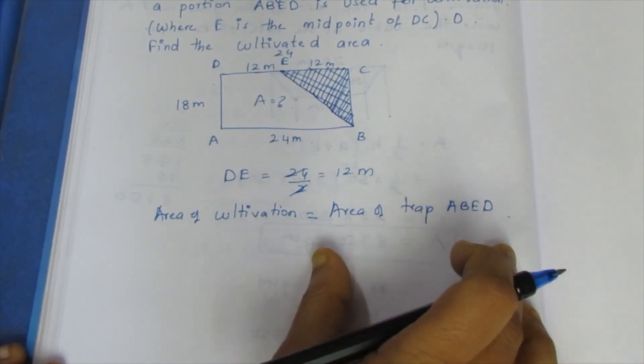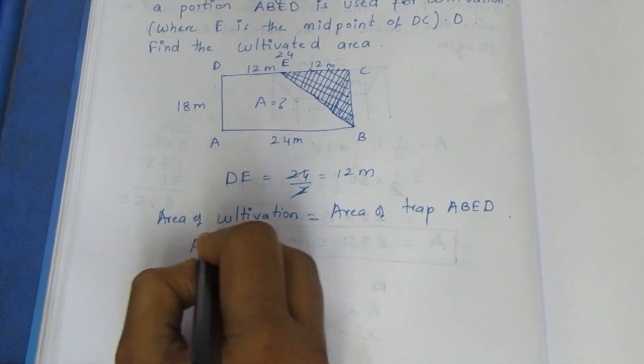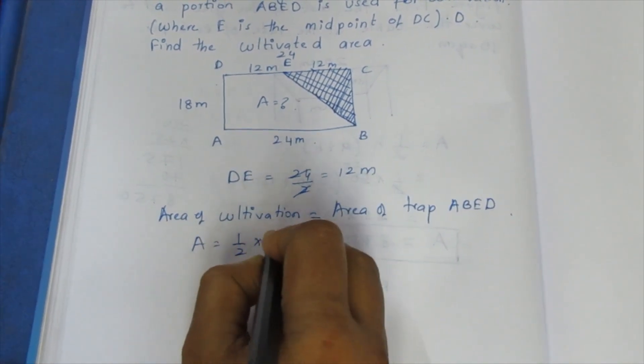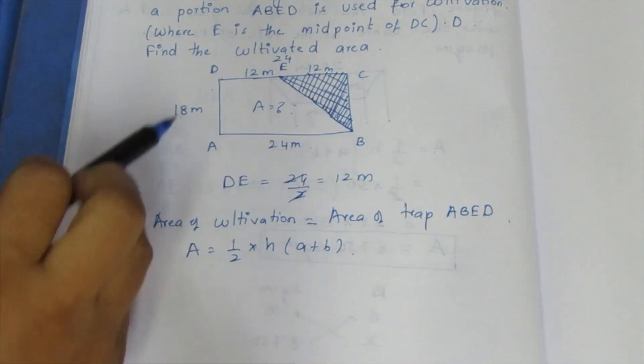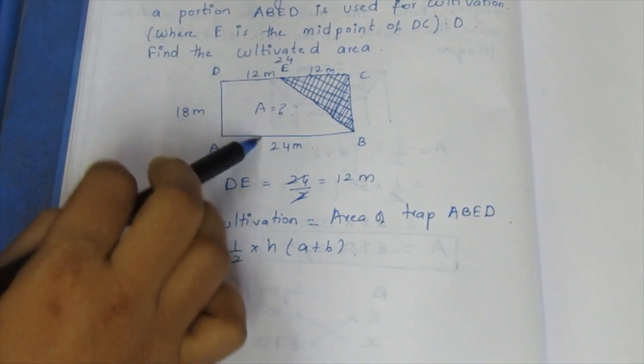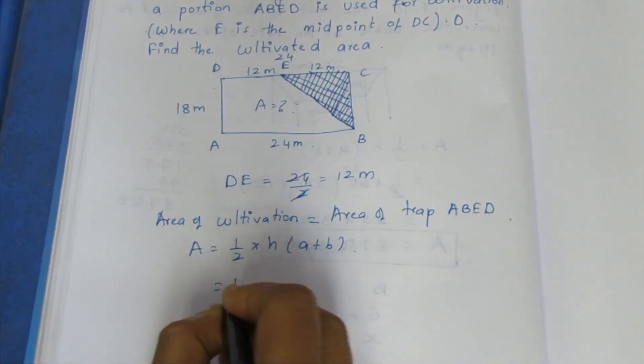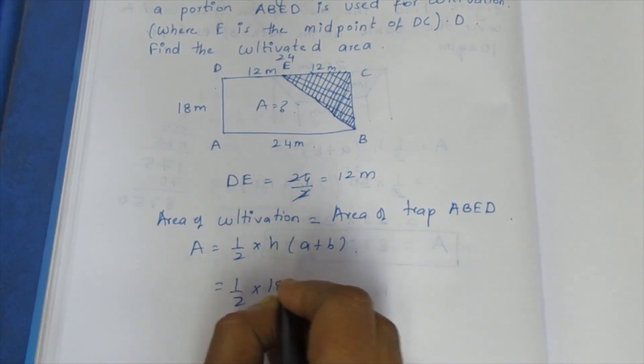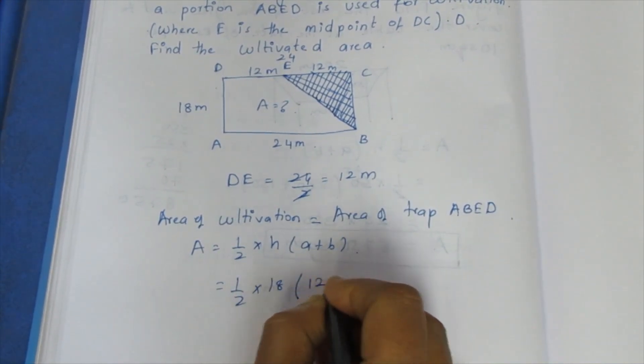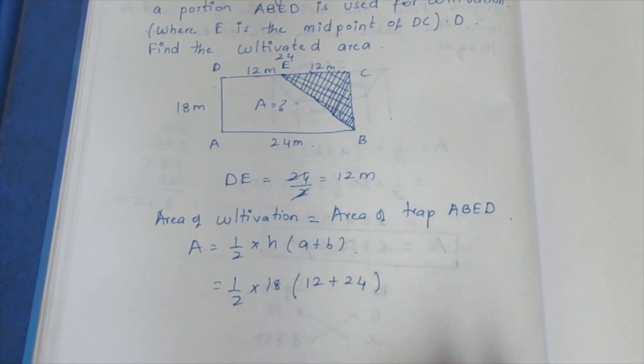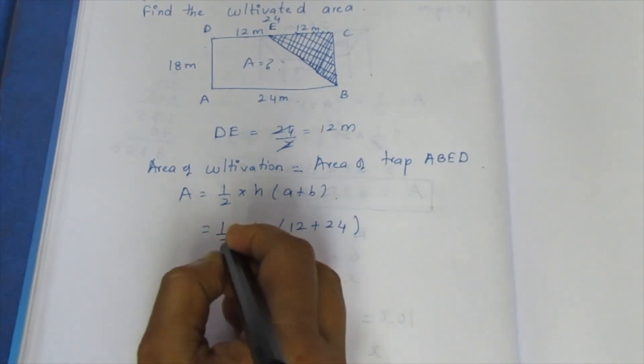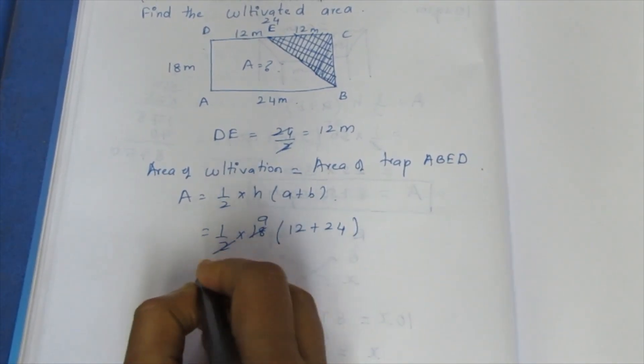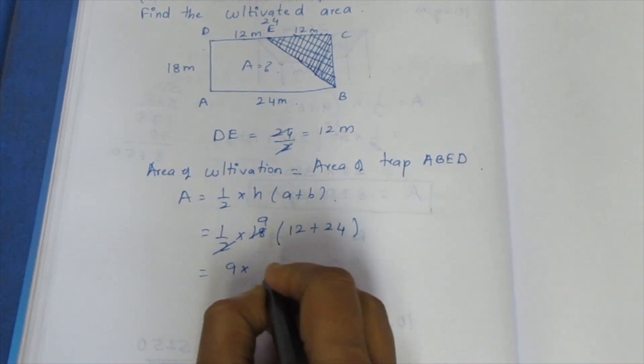Area of trapezium formula: half into H into A plus B. H is the height, A plus B are the parallel sides. Half into height 18, parallel sides 12 plus 24. Half of 18 is 9, 9 into 36.